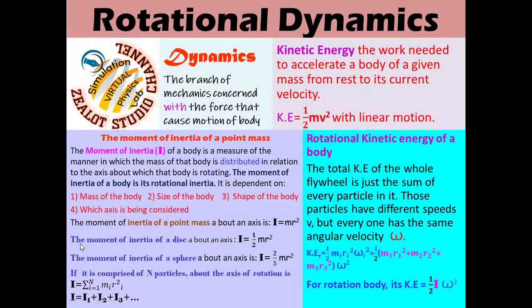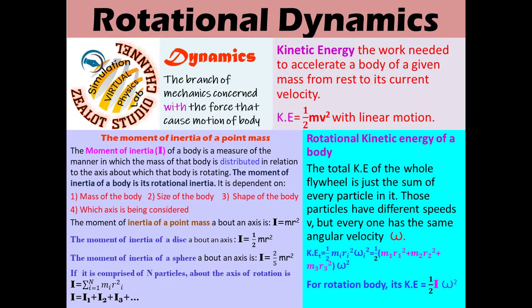The moment of inertia of a disk about its axis is given by one-half times the mass multiplied by the square of the radius. The moment of inertia of a sphere differs — it is given by two-fifths times m times the square of the radius.